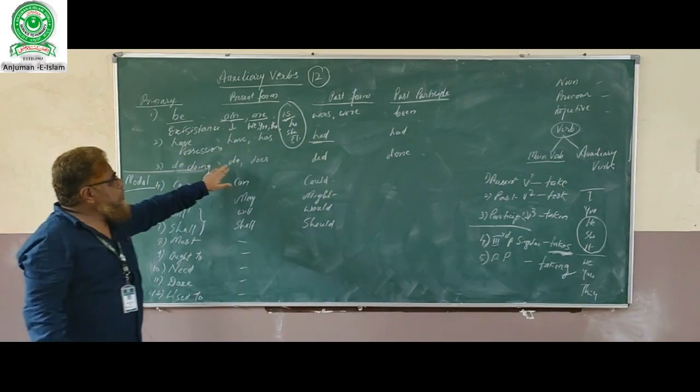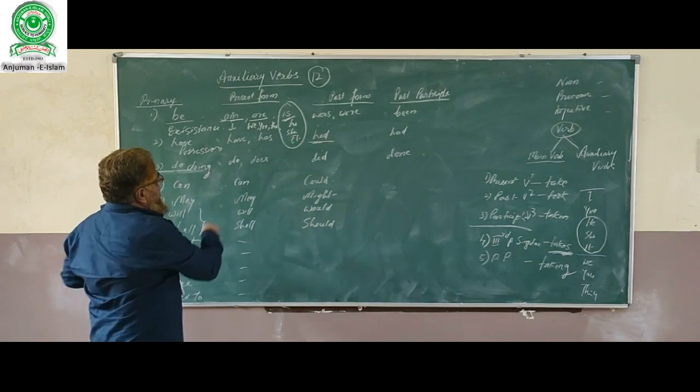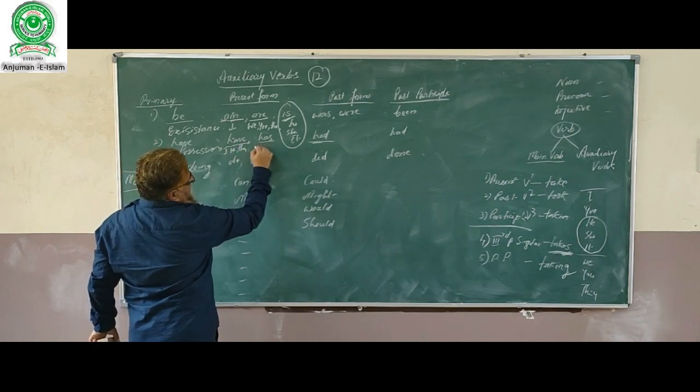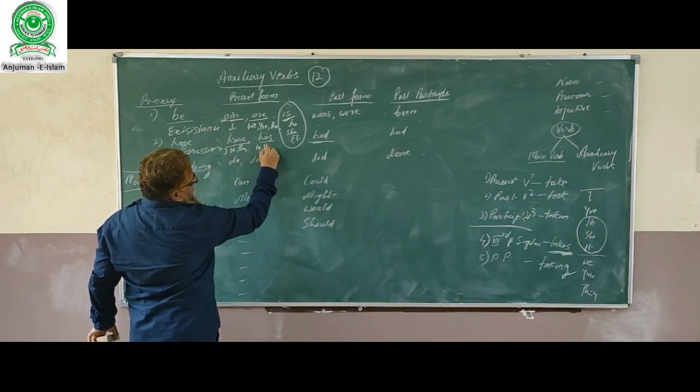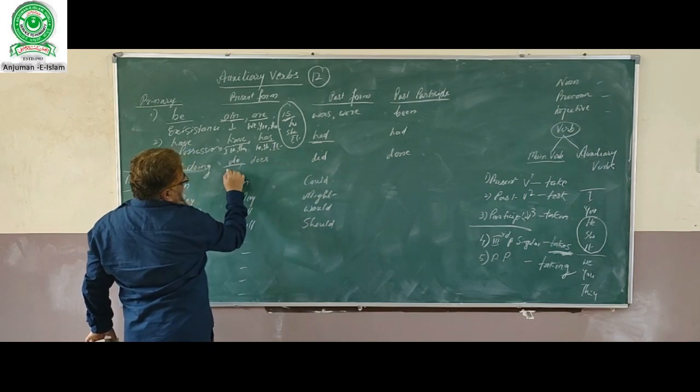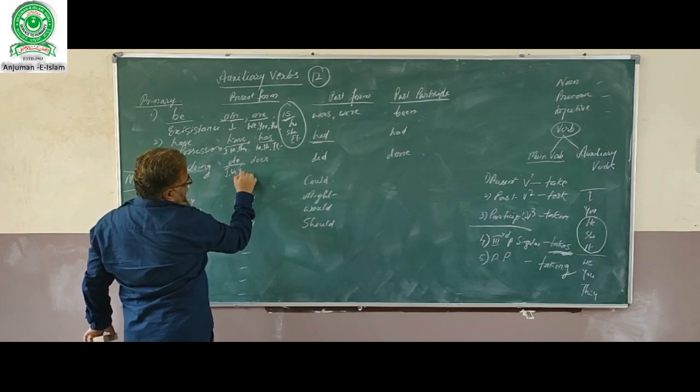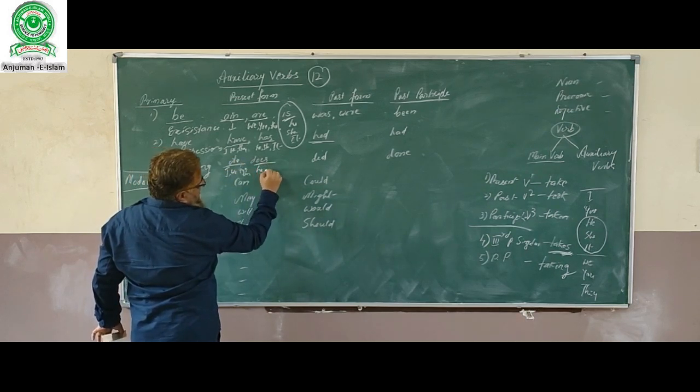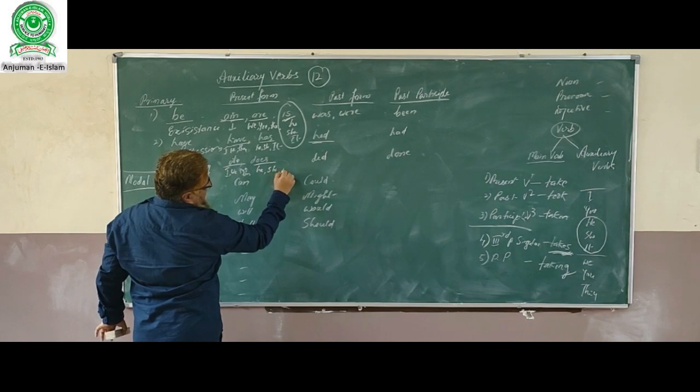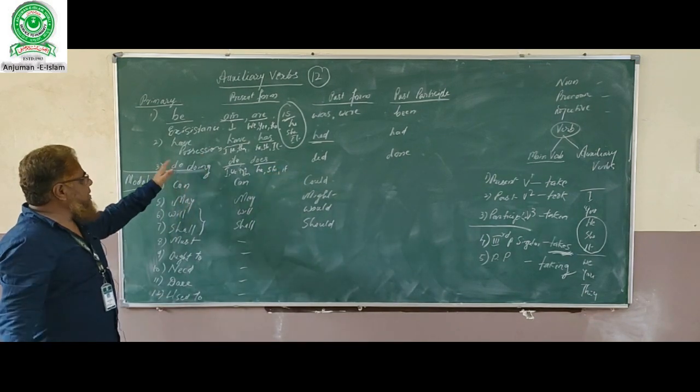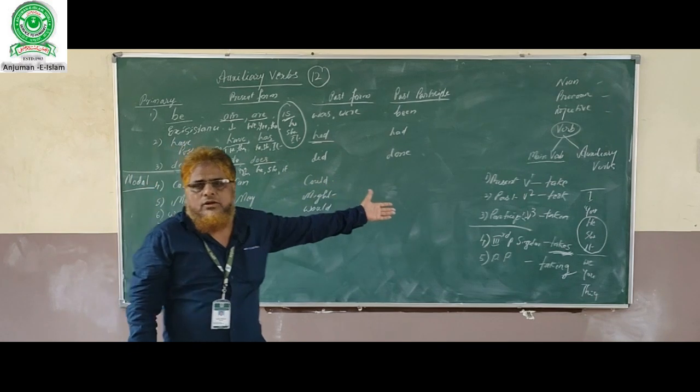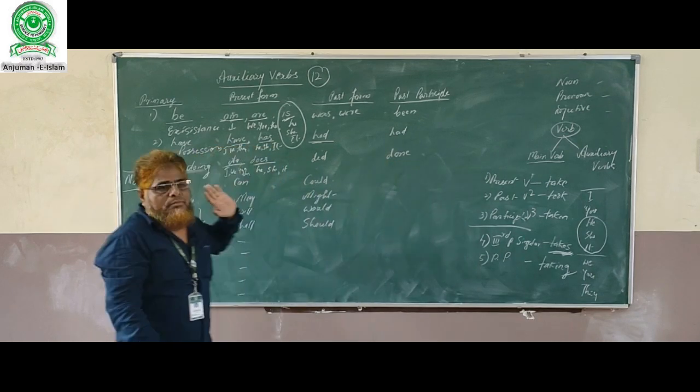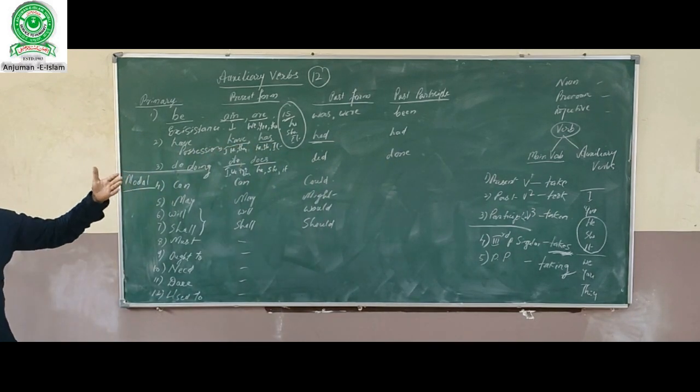Then we have 'do,' which means doing. 'Do' and 'does' for singular. He, she, it: I have, we have, they have, but he has, she has, it has. 'Do' for I, we, you, they. I do, we do, you do, they do, but he does, she does, it does. 'Did' is the past form of 'do.' I did well. 'Did' is common for all the pronouns. 'Done' is the past participle, which we use in perfect tenses.